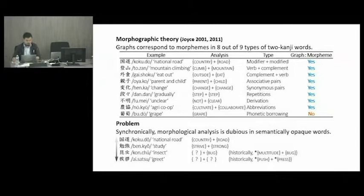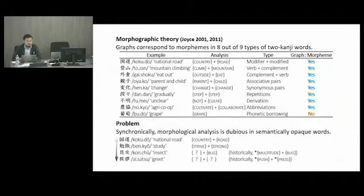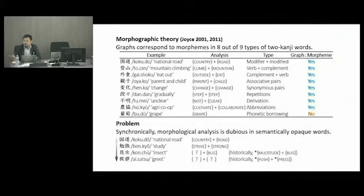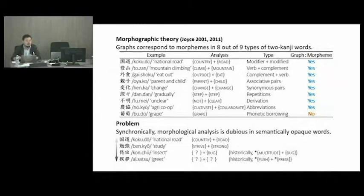According to Joyce, this is true in eight out of nine types of two-kanji words that constitute the largest subset of Japanese words represented in kanji. Joyce distinguishes nine types of such words and maintains that a graph corresponds to a morpheme in one-to-one correspondence in eight out of these nine types. The only exception, at the bottom of the table, is where the graphs represent syllables rather than morphemes — specifically the word boudou, meaning grape, which consists of one single morpheme with no evidence it contains two or more separate morphemes.